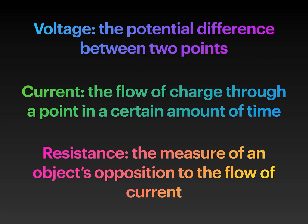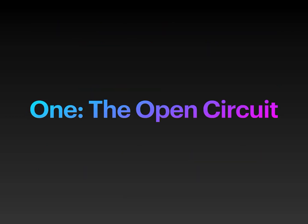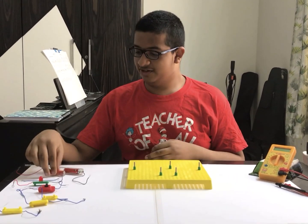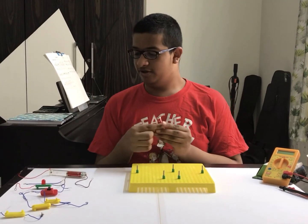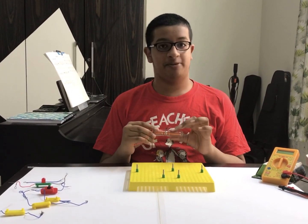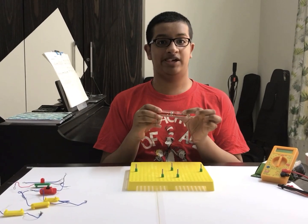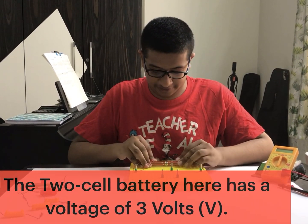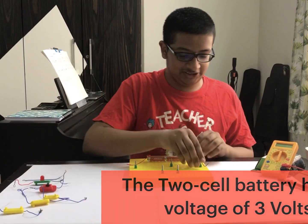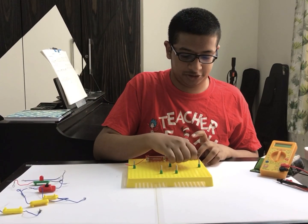Remember these terms — we will be seeing them a lot during the video. Let's make a circuit. This is a cell. When we have more than one cell, we call it a battery, so this is a two-cell battery. I am going to put it here and connect these wires to these pins. This is how we are going to connect the components together.